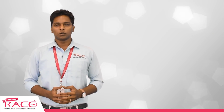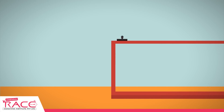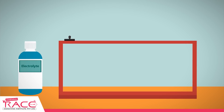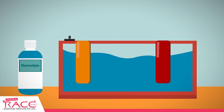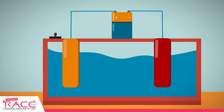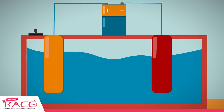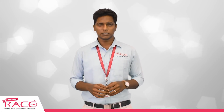Now, coming to the process of electrolysis. Electrolysis involves passing electricity through a chemical solution using electrodes — a positive electrode and a negative electrode — connected to a DC supply. The solution contains positive and negative ions in a closed circuit. This solution is called an electrolyte; any chemical solution that contains ions and conducts electricity is called an electrolyte.